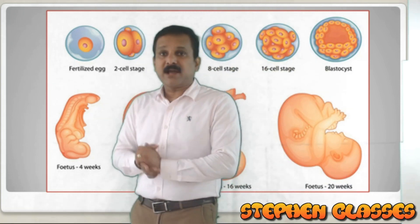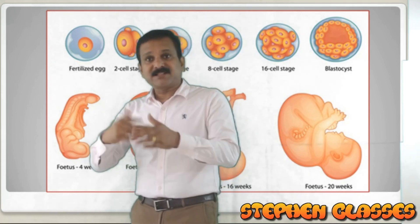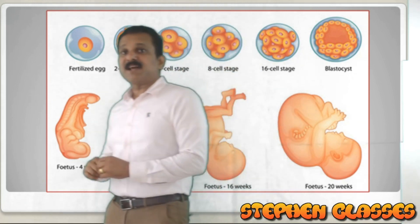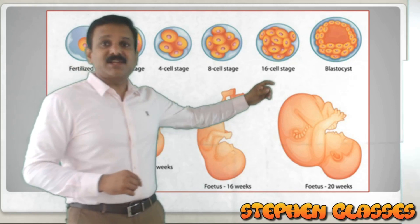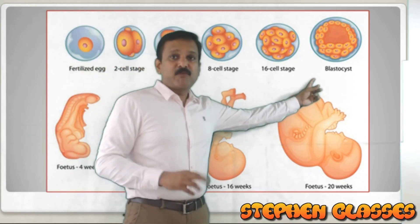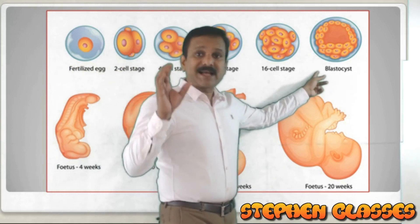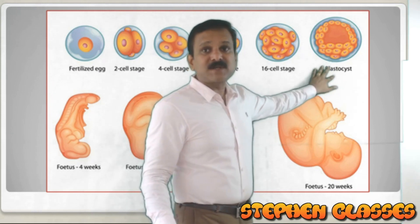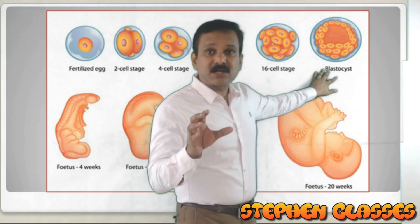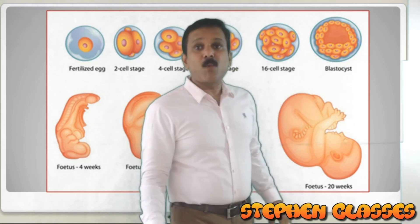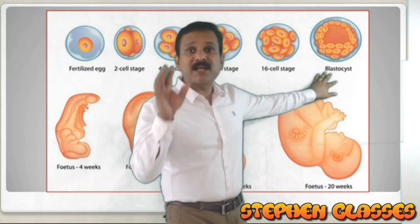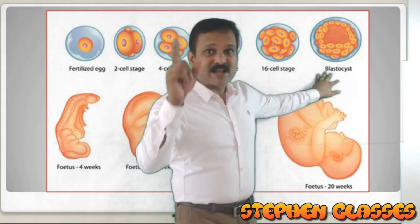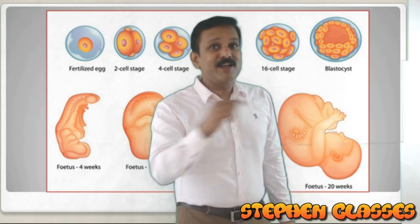After the morula stage there is the blastocyst. The blastocyst is a condition when 32 cells are present in the embryo — after about seven days of fertilization. This blastocyst is the structure which attaches onto the uterine wall, and that attachment is called implantation. So attachment of the blastocyst onto the uterine wall is called implantation.